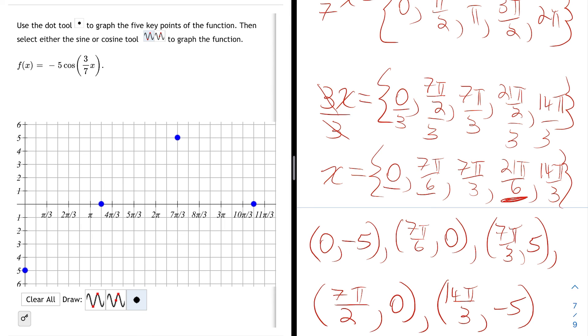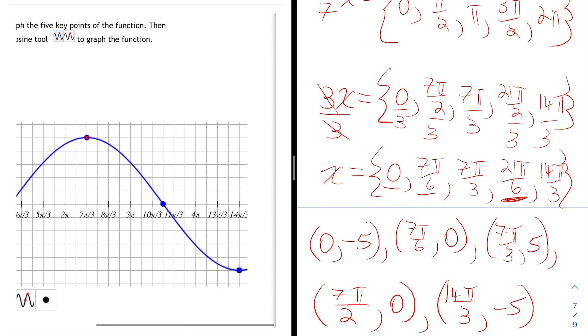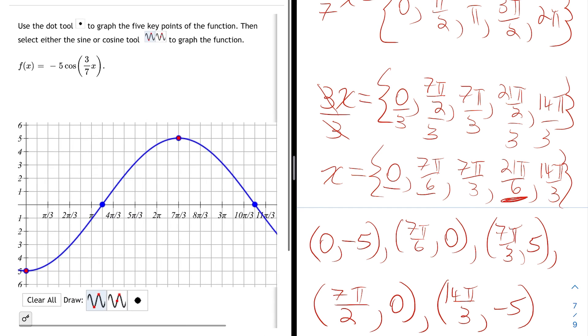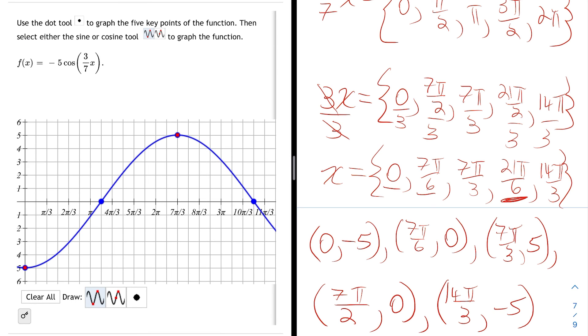Last thing I need to do is select the cosine tool. The cosine is the one on the left where I have to identify a minimum and a maximum. I graph one minimum and the next maximum consecutively. And I notice that it goes through all my key points there, so I think I did it correctly. And that is how you do it.